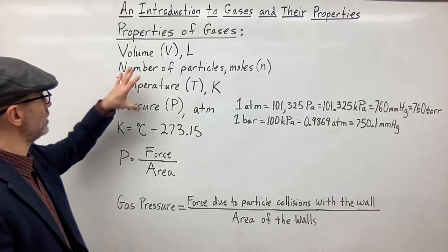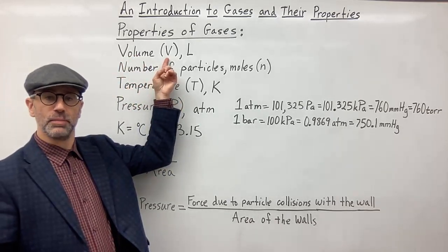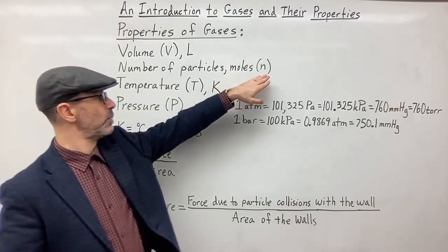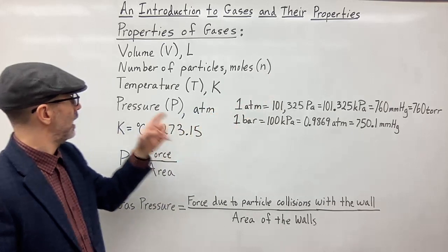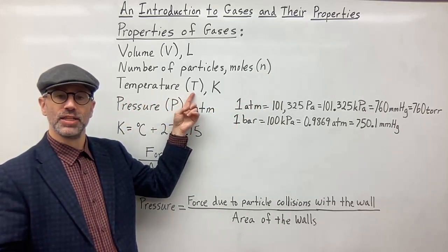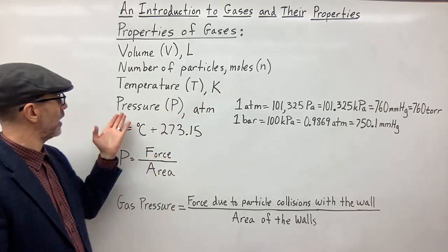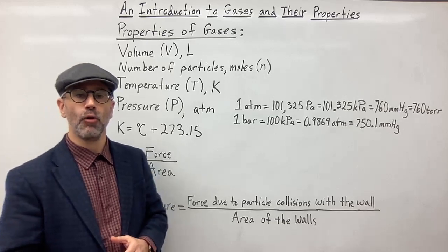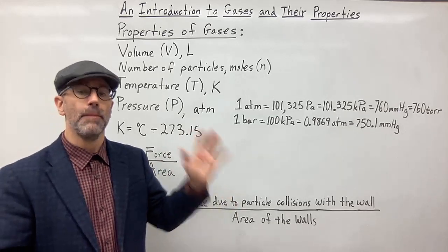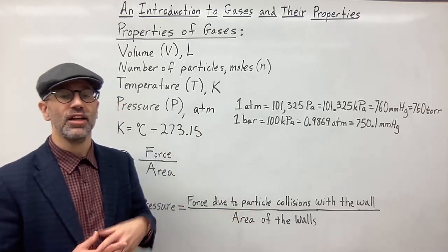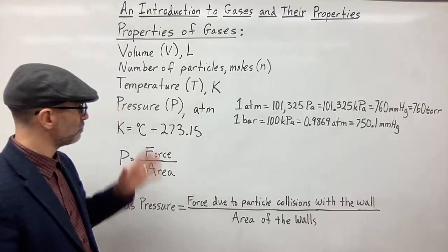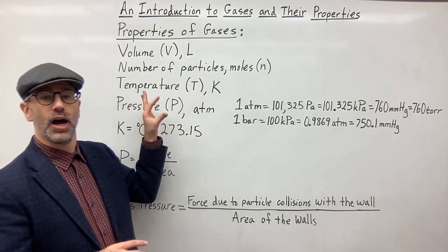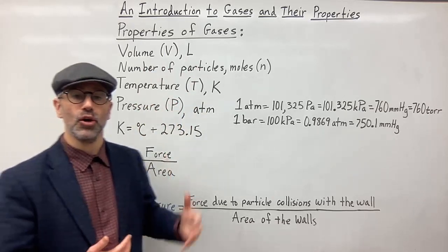The four properties we're talking about are: volume of the gas, represented by the capital letter V; the number of particles, usually represented in moles by the small letter n; temperature, represented by the letter T and always measured in Kelvin; and pressure, represented by the letter P, often in atmospheres, though the SI unit for pressure is Pascals or kilopascals. These are the four properties of gases that have relationships to each other, and if we know some of these properties we can predict what the other property is going to be.